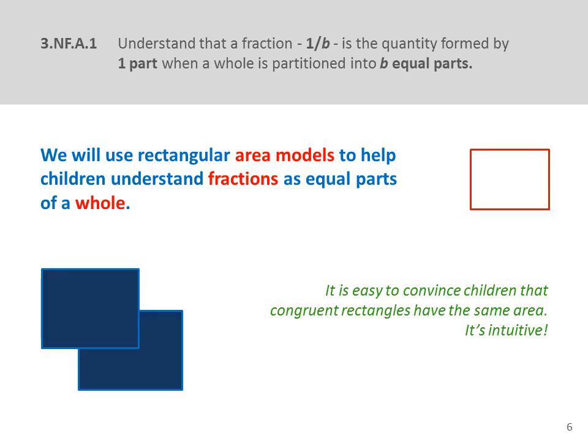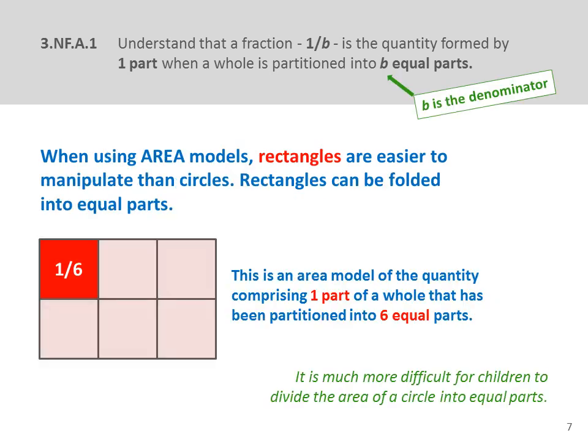To model this first standard we use an area model. Area models are designed to help children understand that fractions represent equal parts of a whole. We can divide the whole into two parts, three parts, five parts or more, but the parts must be equal. I use rectangles as area models because rectangles are far easier than circles for children to manipulate, and it's easy to convince children that congruent rectangles have the same area — it's intuitive. This is a rectangular area model for one-sixth, the quantity comprising one part of a whole that has been partitioned into six equal parts.